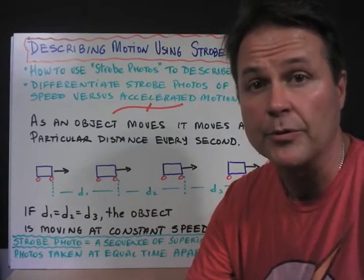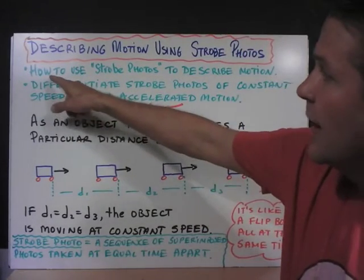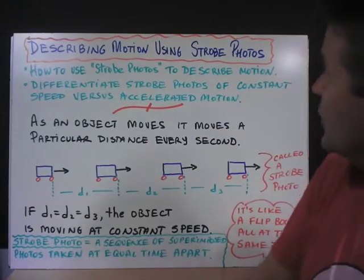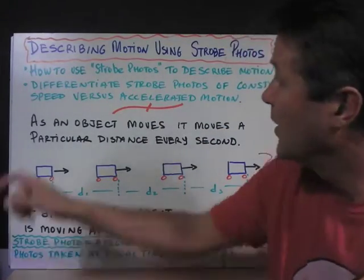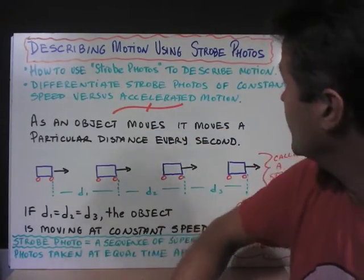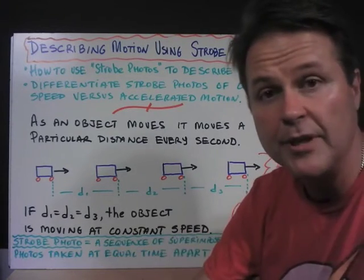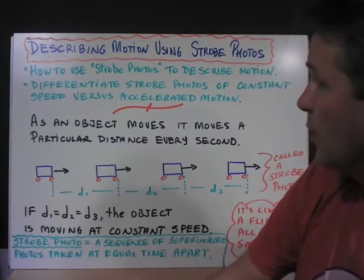Describing motion using strobe photos. In this video we're going to look at how to use strobe photos to describe motion, and we're going to differentiate strobe photos of constant speed versus accelerated motion.